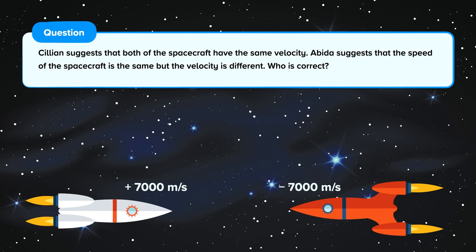Killian suggests that both of the spacecraft have the same velocity. Abida suggests that the speed of the spacecraft is the same, but the velocity is different. Who is correct?